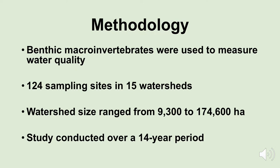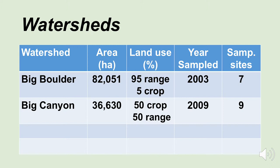The study basically consisted of data collected over a 14-year period. Let's take a look at these watersheds for just a few moments. You'll see a table we'll go through — the watershed name is on the left, the area/size of the watershed, land use in the center, the year that samples were taken, and how many sampling sites were actually in each watershed.